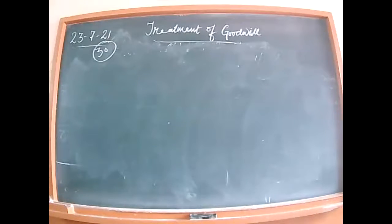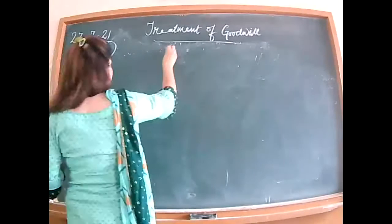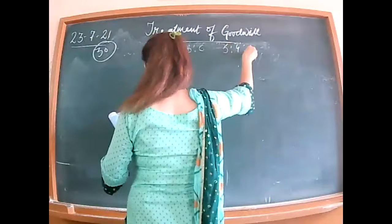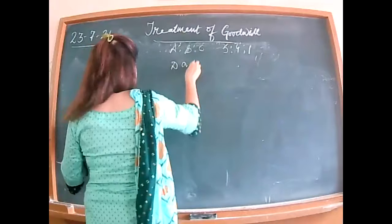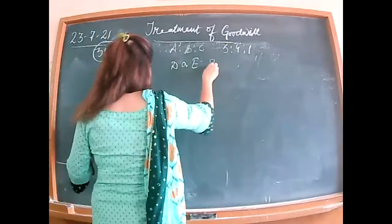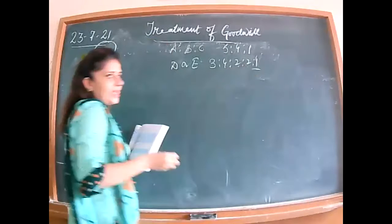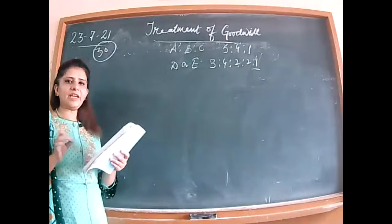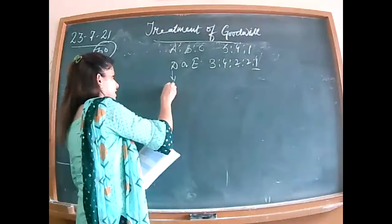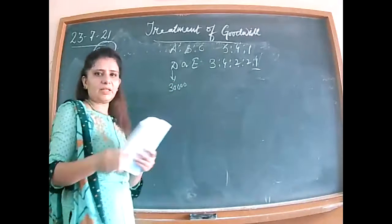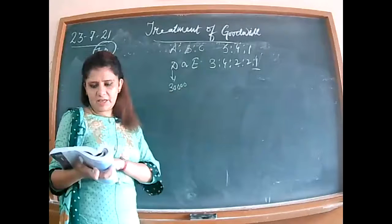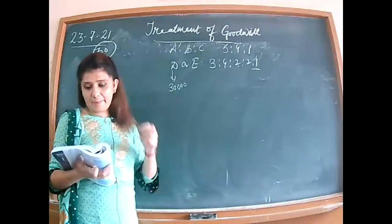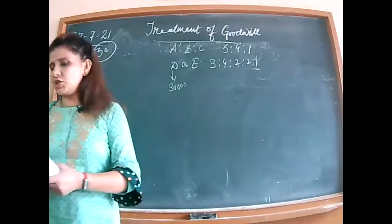Illustration 30: Three partners A, B, C in ratio 5:4:1. Two new partners D and E are being admitted. Their new ratio after admission is given. D says he will bring 30,000 as goodwill; E says he has no money for goodwill. So D's goodwill goes to Premium for Goodwill in cash — 30,000. E's share will be debited to E's current account. Both D and E bring 40,000 each as capital.